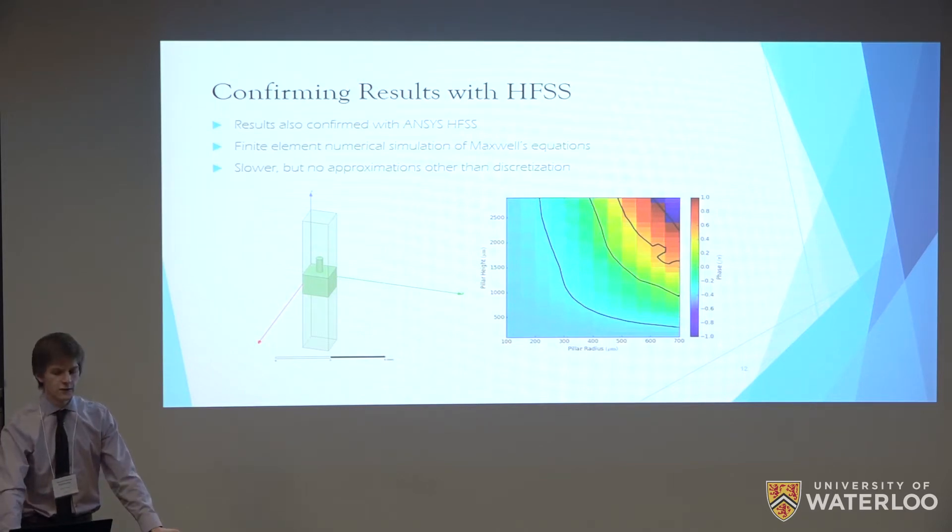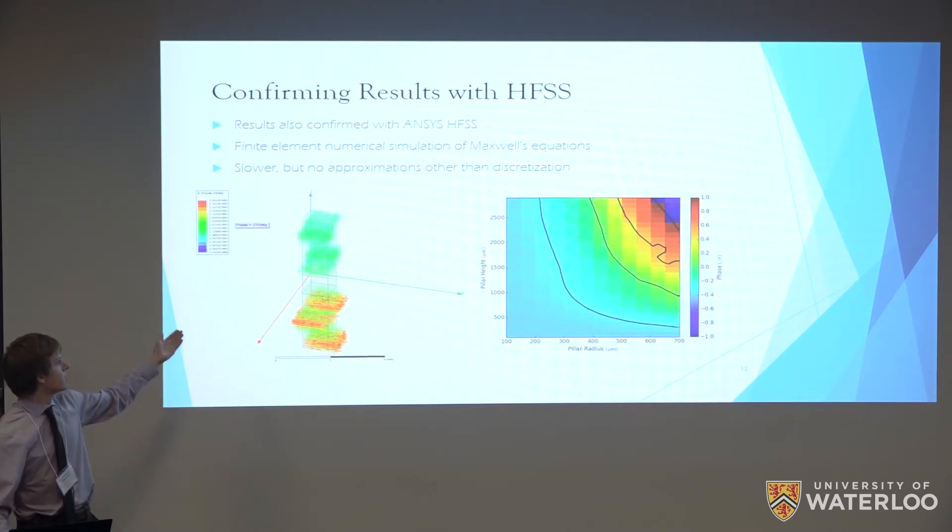We also confirmed these results with another software called ANSYS HFSS. The reason we did this is because it uses a different technique, it uses a finite element numerical method. This is actually solving Maxwell's equation. Unlike S4, this is an exact solution, or numerical solution of Maxwell's equation, other than the discretization of breaking up into cells. This kind of confirms, you can see that the contour plots on this graph, the color is the phase that we get from S4 and the contour plots are what we get from HFSS. As you can see, they're very similar. This is at 100 gigahertz. You can see this in this animation. This is basically what you get out of the simulation. The arrows are kind of the electric field. The red is the stronger electric field you see. It's coming out from the bottom, it's interacting with the pillar in the middle, and some of it's making it through to the other side. From this we can extract the phase shift.